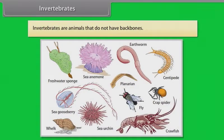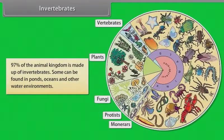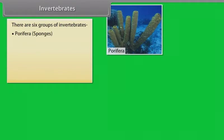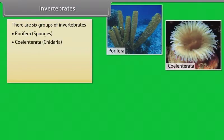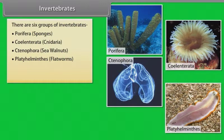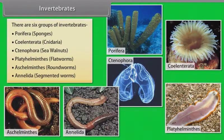As we have already said, invertebrates are animals that do not have backbones. An exoskeleton is a hard outer covering that protects an animal's body and gives it support. Insects and some other invertebrates have exoskeletons. Ninety-seven percent of the animal kingdom is made up of invertebrates. Some can be found in ponds, oceans and other water environments. There are six groups of invertebrates: Porifera (example: sponges), Coelentrata (example: Cnidaria), Ctenophora (example: sea walnuts), Platyhelminthes (example: flatworms), Aschelminthes (example: roundworms), and Annelida (example: segmented worms).